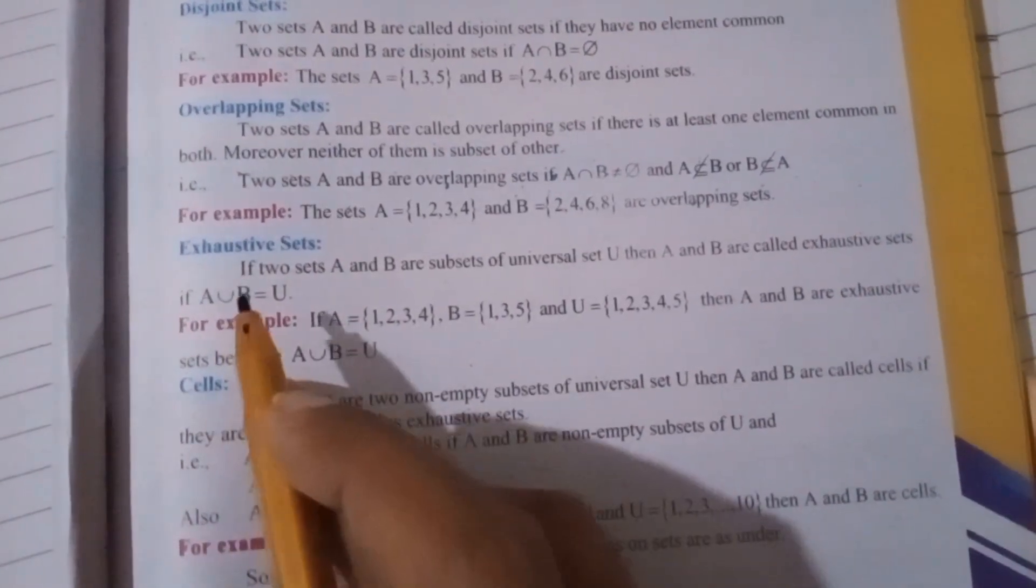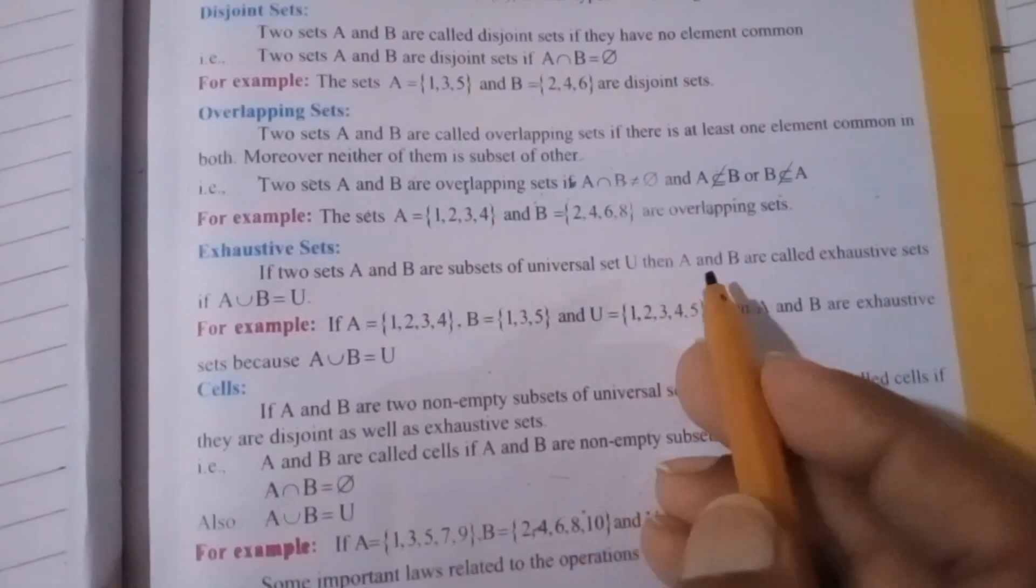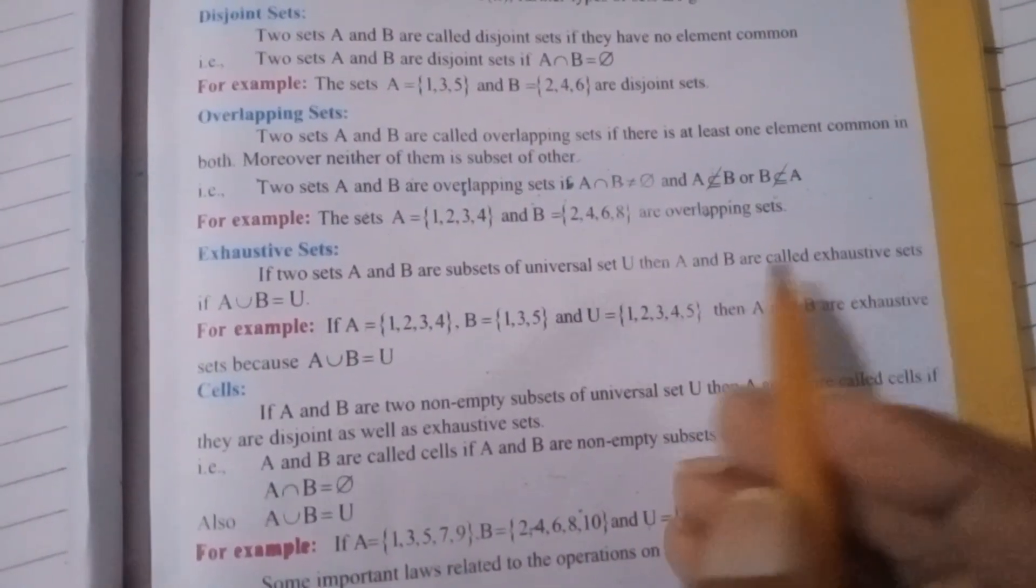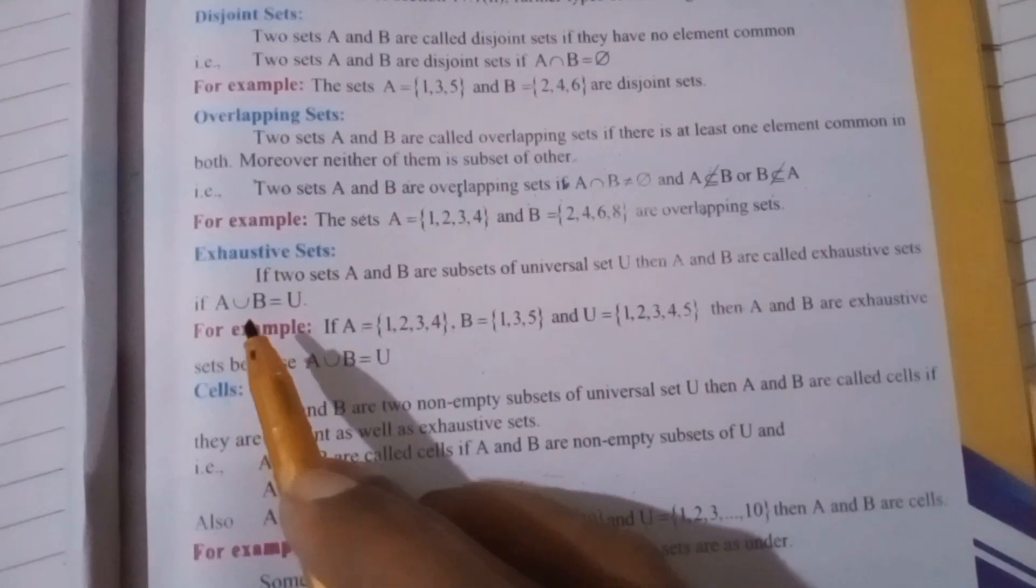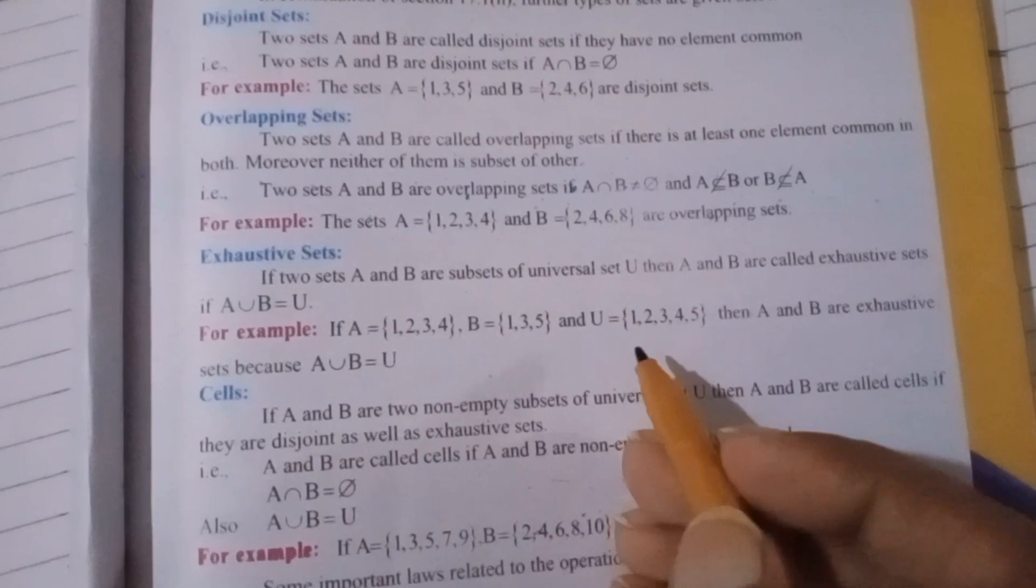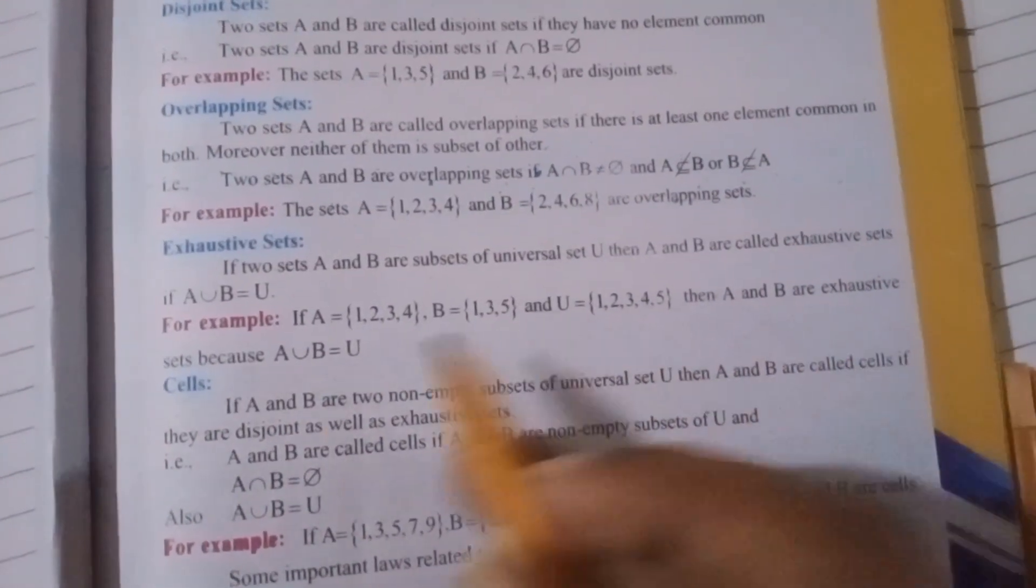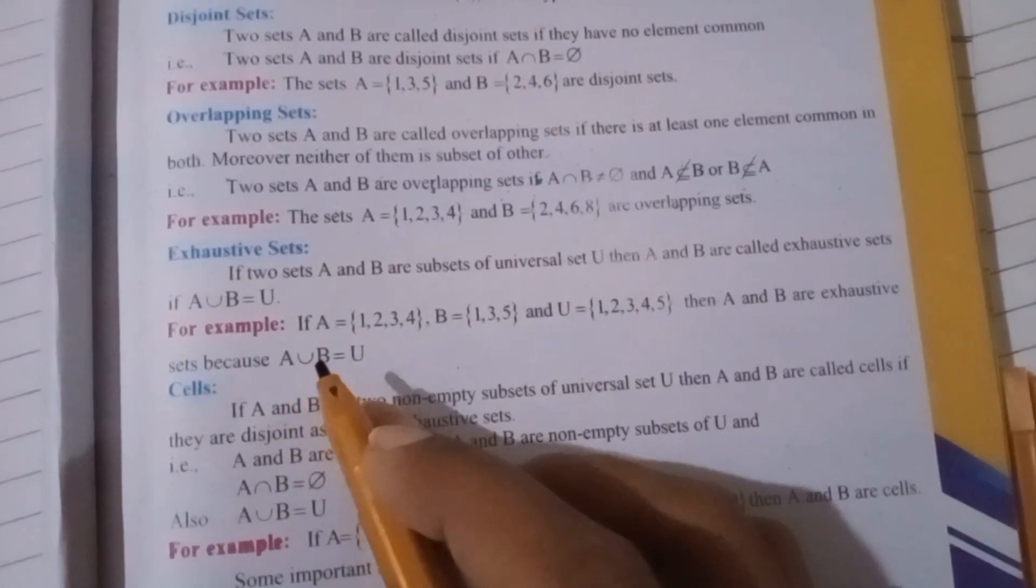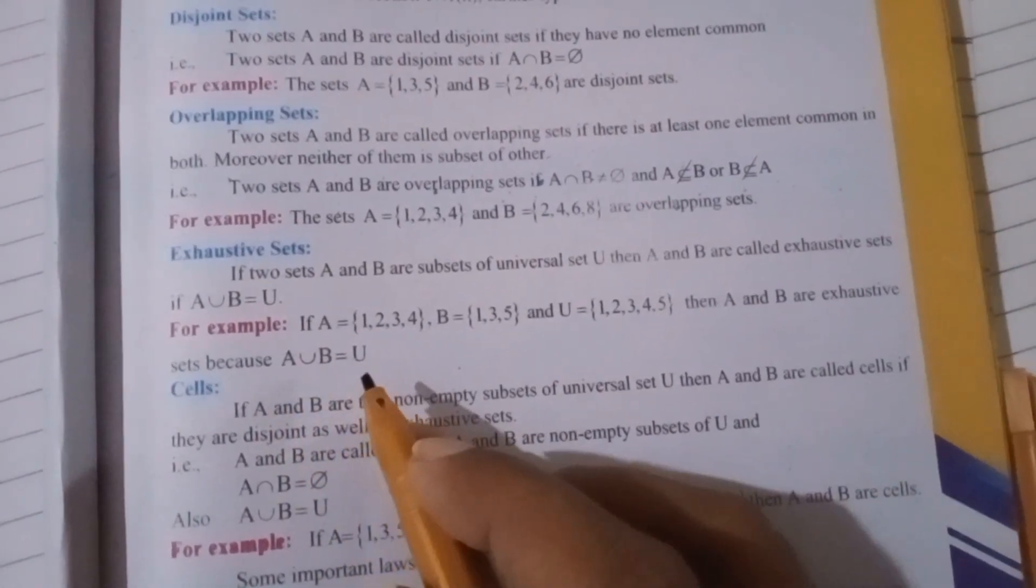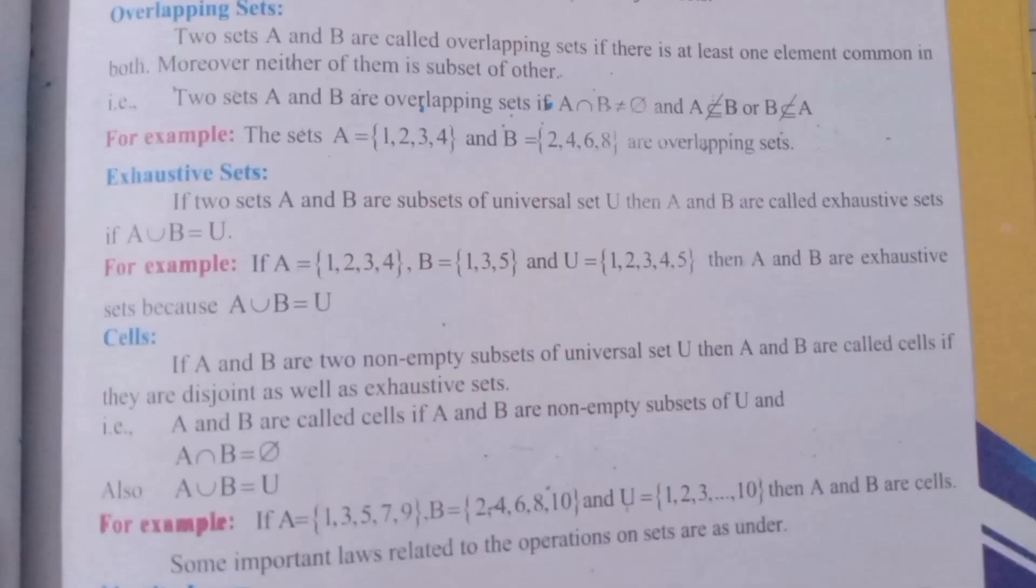Exhaustive sets: If two sets A and B satisfy A union B equals universal set U, then A and B are exhaustive sets. This means elements of set A and elements of set B together cover all elements of the universal set.